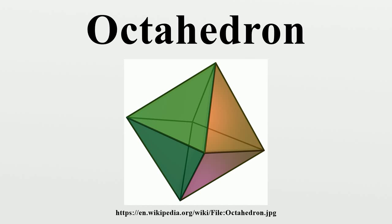Octahedra in the physical world: natural crystals of diamond, alum, or fluorite are commonly octahedral, as is the space-filling tetrahedral-octahedral honeycomb. The plates of Widmanstätten pattern alloy in octahedrite meteorites are arranged paralleling the eight faces of an octahedron. Many metal ions coordinate six ligands in an octahedral or distorted octahedral configuration.